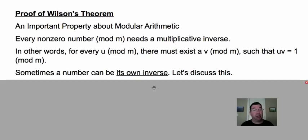There are times when a number can be its own inverse, so that when you multiply that number by itself, you get one, instead of multiplying by a different number to get one. So let's talk about this a little bit further.